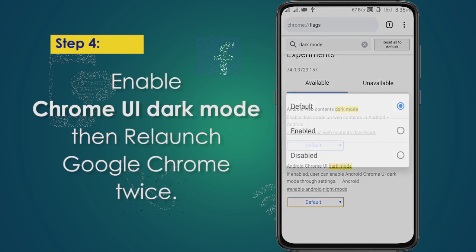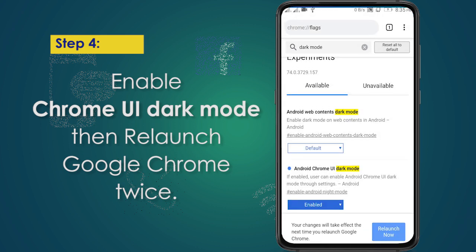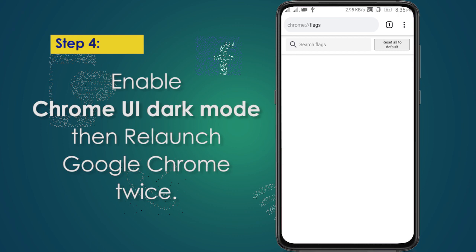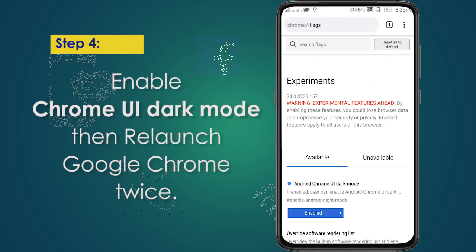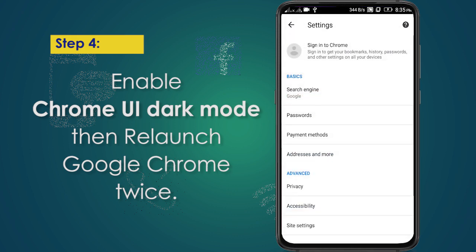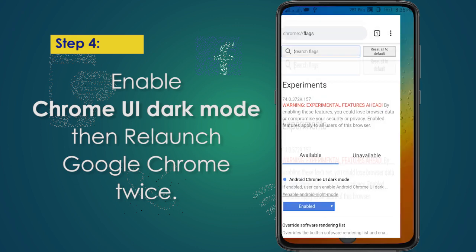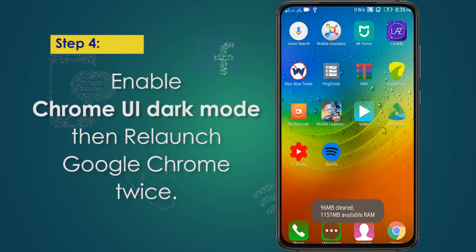One option is Android Chrome UI dark mode and the other is Android web contents dark mode. To enable Android Chrome UI dark mode, tap the drop-down menu and select enable. You need to relaunch the browser twice to see the effects and settings.